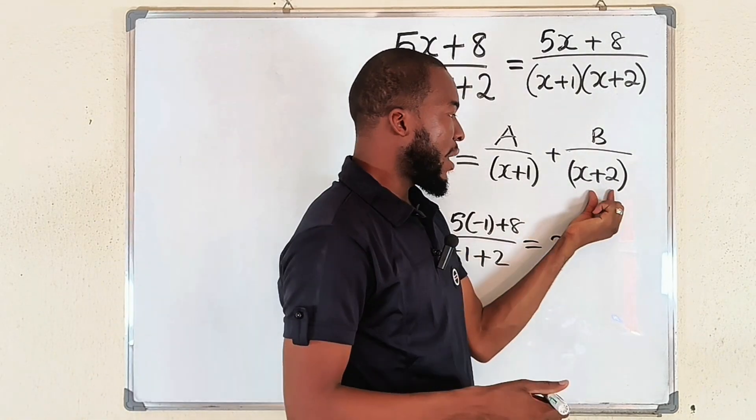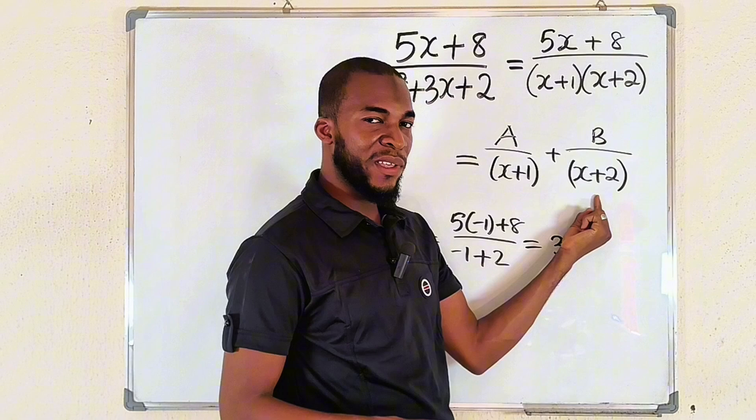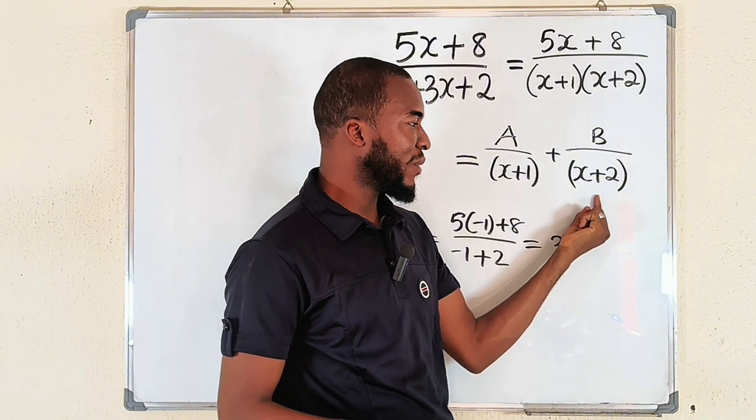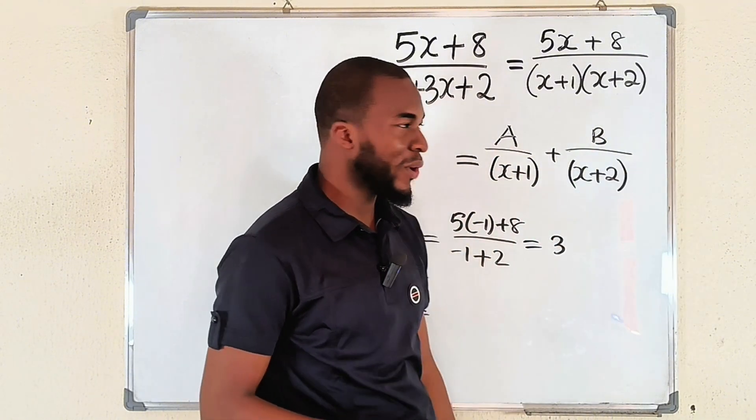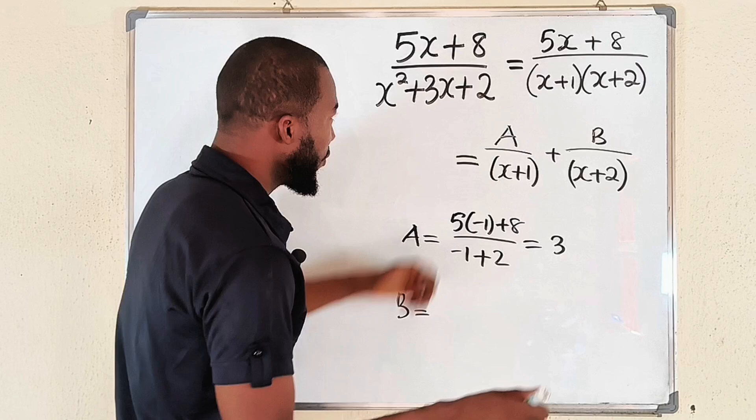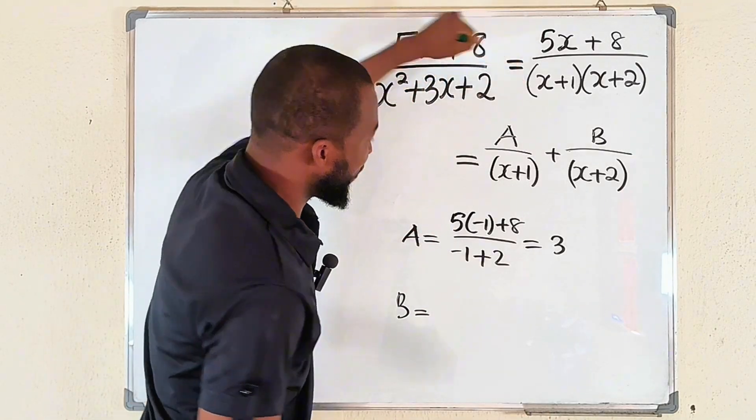You come here. What value of x will make the whole of this to be 0? Minus 2, definitely. Or you set this to be 0 and solve for x. So use that minus 2 for this and this, wherever you have x.